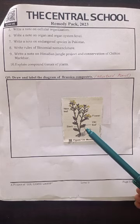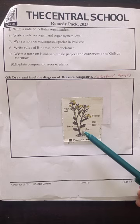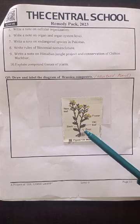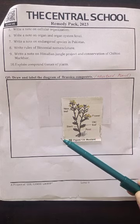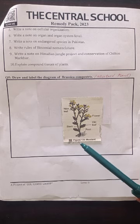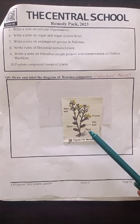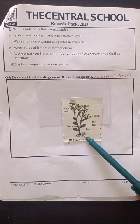In this diagram, this is the picture of the mustard plant. You have to draw this diagram on the space given in question number 5 in this section. You have to draw and label this diagram.